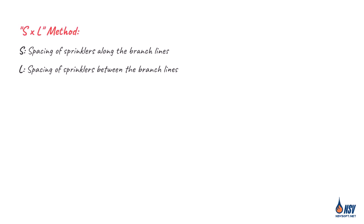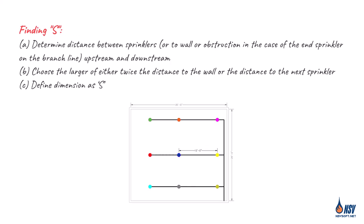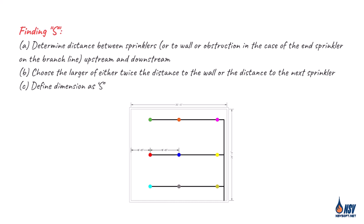NFPA 13 introduces the S by L method for determining the protection area of coverage. In this method, S represents the spacing along the branch line, determined by measuring the distance between sprinklers or the nearest wall. The larger value, either twice the distance to the wall or the distance to the next sprinkler, is used as S.